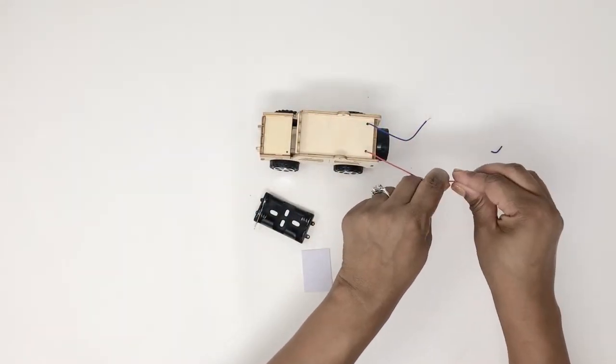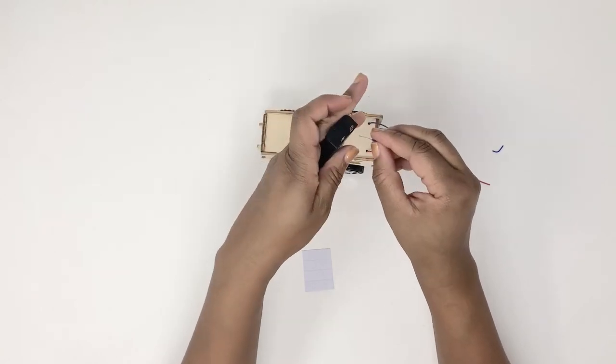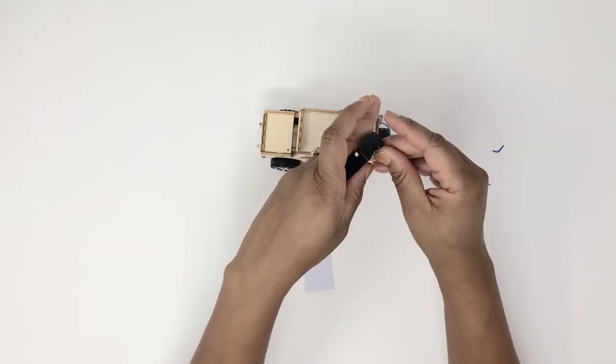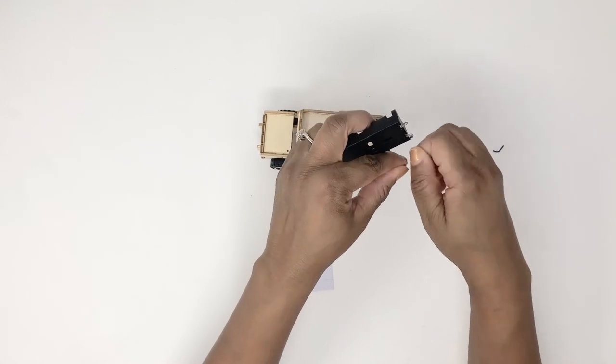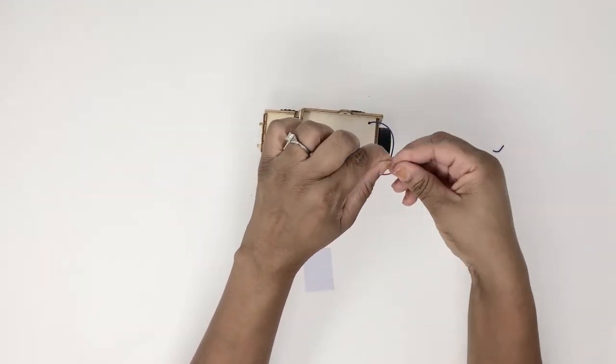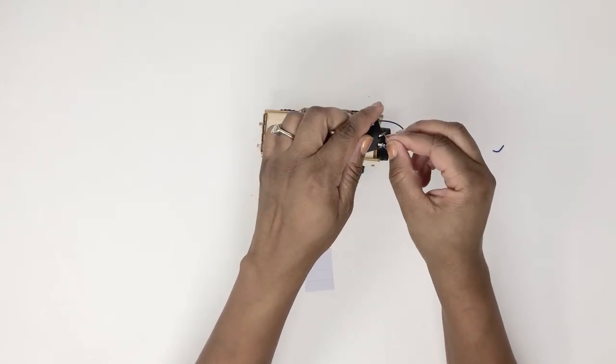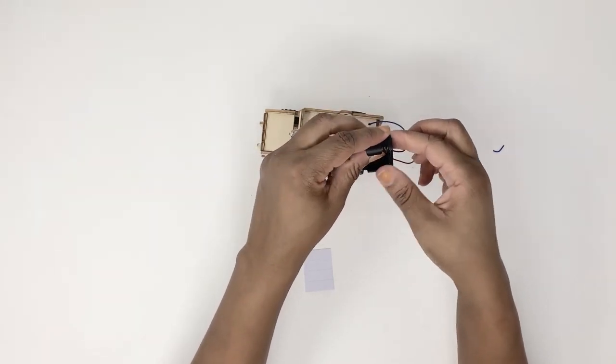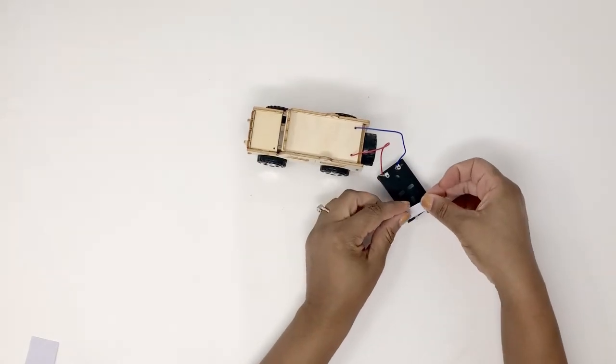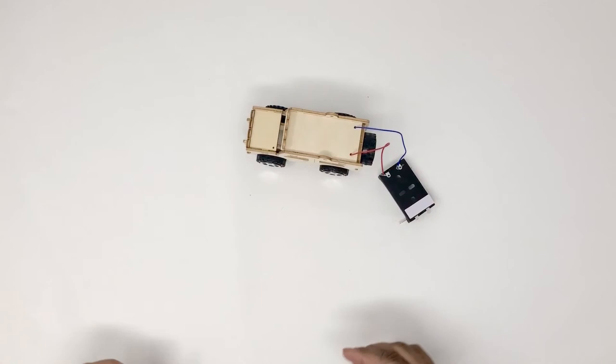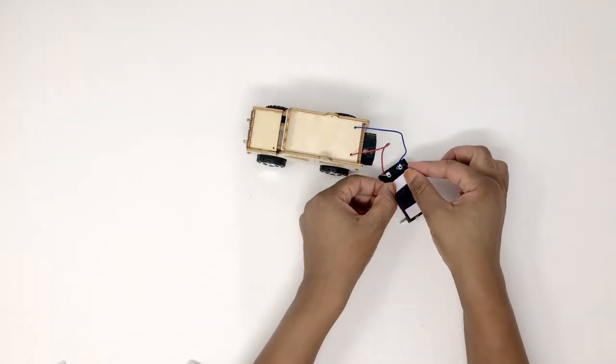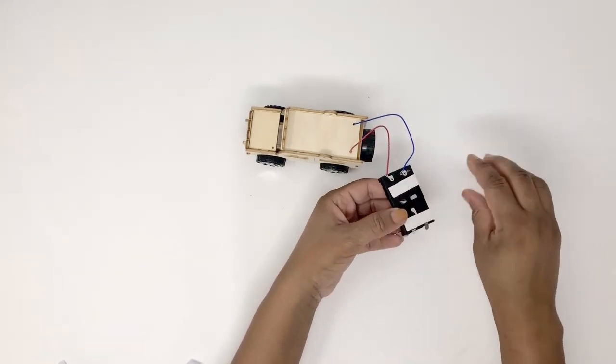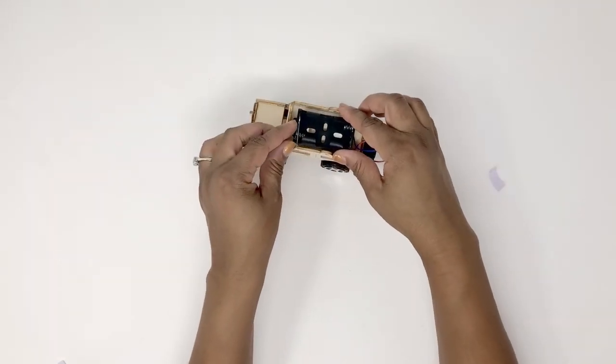Now we're going to attach the wires to the battery case. Now remember what I mentioned earlier, you have to make sure that the wires are attached to the right side so that your car can drive forward instead of backwards. So if you find your car driving backwards, it's probably because you don't have the wires on the right side. So check the instruction manual in your kit to make sure that you've got it correct. Now attach the double-sided tape to your battery case and then stick the battery case onto the top of your car.